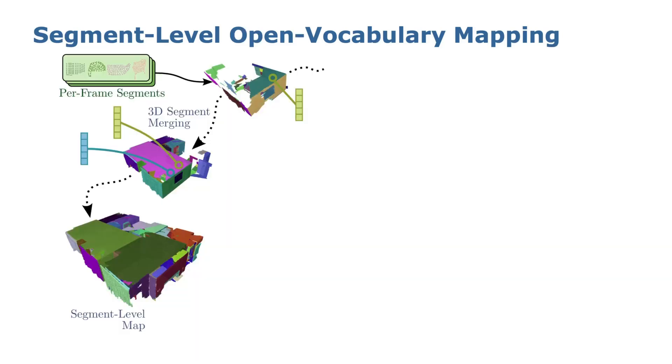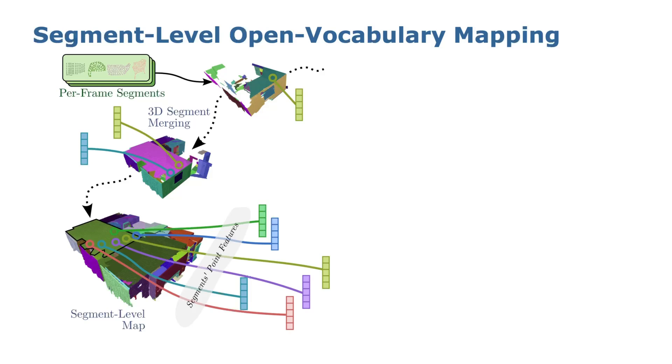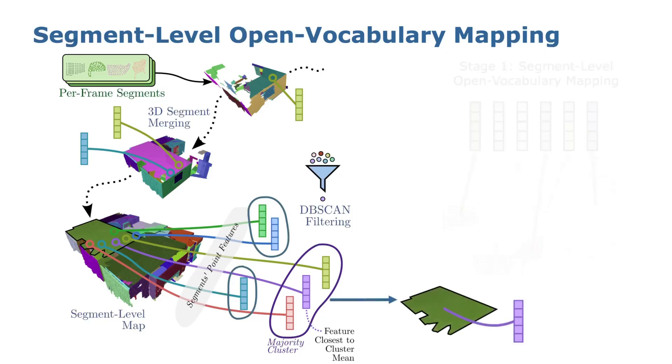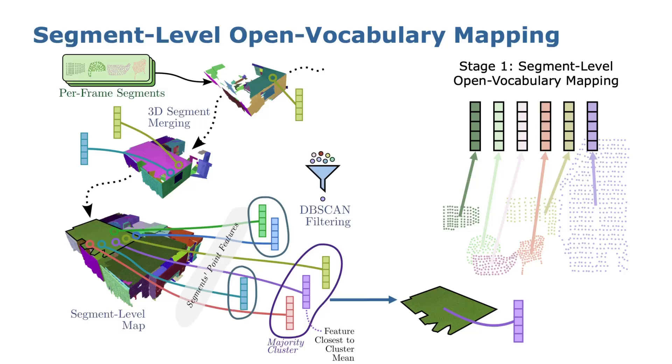In the next step, we incrementally merge the per-frame segments. Based on the global point-wise features, we collect all the features belonging to the same segment and apply DBSCAN clustering. Lastly, we look at the main cluster and select the feature closest to the cluster mean as the segment feature, which builds a segment-level open vocabulary map.